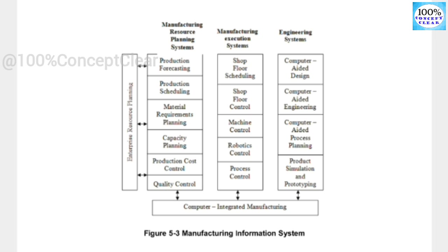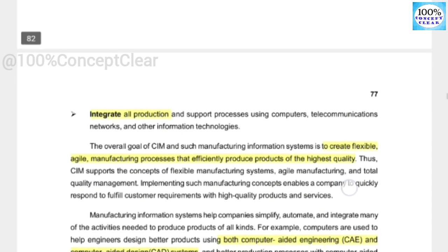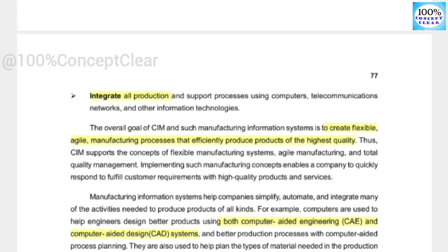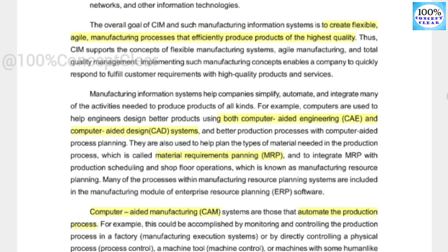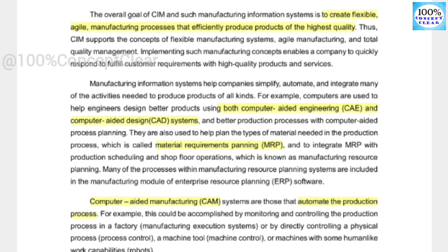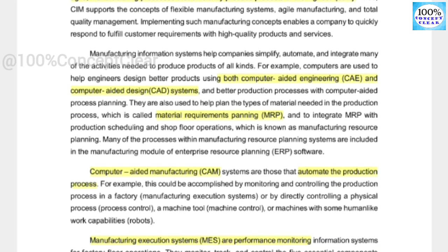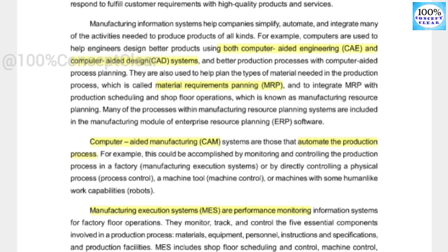Manufacturing information systems measure what happens in manufacturing and resource-planning systems, manage execution experience systems, and model things in engineering systems. The overall goal of CIM and such manufacturing information systems is to create flexible manufacturing processes that efficiently produce products of the highest quality. The systems used include computer-aided engineering (CAE), computer-aided design (CAD), material requirement planning (MRP), and computer-aided manufacturing (CIM), which automates the production process.